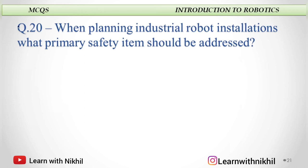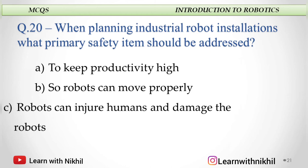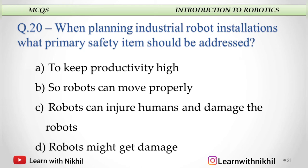Next: When planning industrial robot installation, what primary safety item should be addressed? To keep productivity high, so robot can move properly, robots can injure humans and damage the robot, or robot might get damaged? The answer is: robots can injure humans and damage the robots.